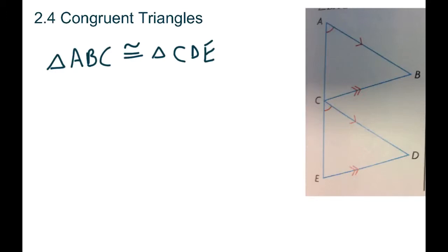The notation for congruence looks like an equal sign with a little squiggle over it. So in this case, the way we would say this is that triangle ABC is congruent to triangle CDE. You have to be careful with the order.